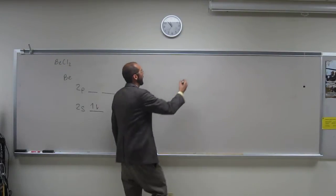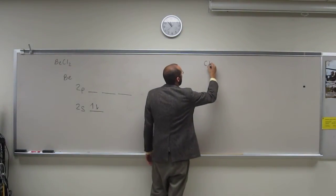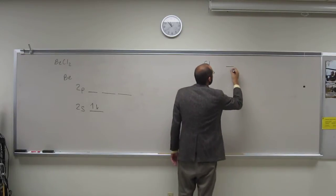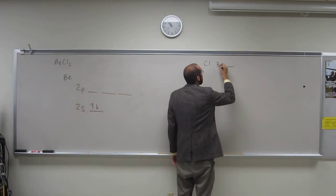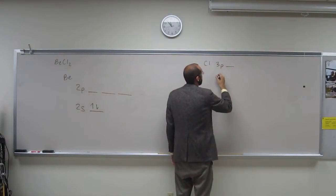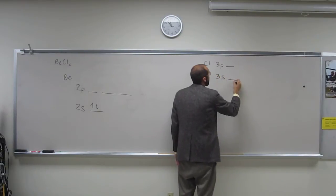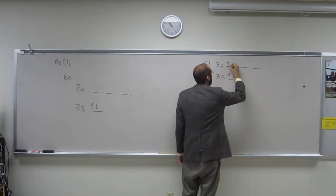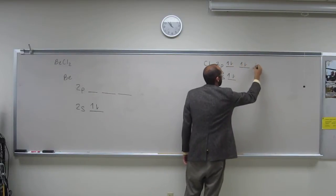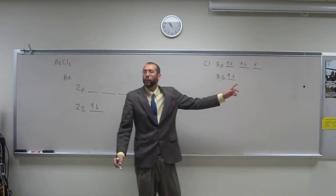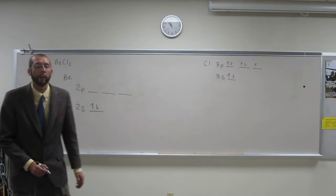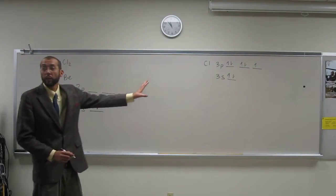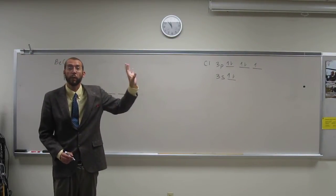Because when we're thinking about the chlorine atom, when we're looking at its 3p, its valence shell, it's got that half-filled orbital that it can make its bond out of. In fact, chlorine in this structure doesn't need to rehybridize. Recall that.